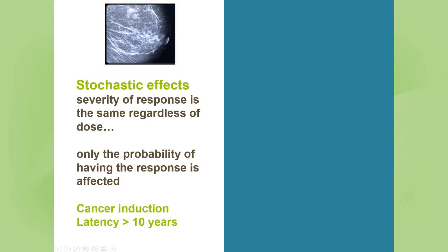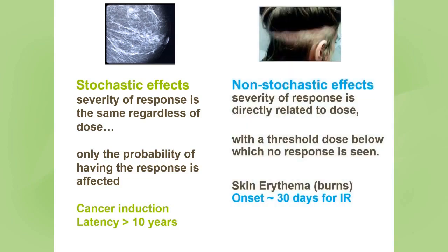There are two types of radiation effects. Stochastic effects are where the severity of the response is the same regardless of the dose — only the probability of it happening is affected. An example is cancer induction, with a latency period greater than 10 years. Non-stochastic effects are where the severity of the response is directly related to dose, and there is a threshold below which no response is seen. Skin erythema is an example of a non-stochastic effect.